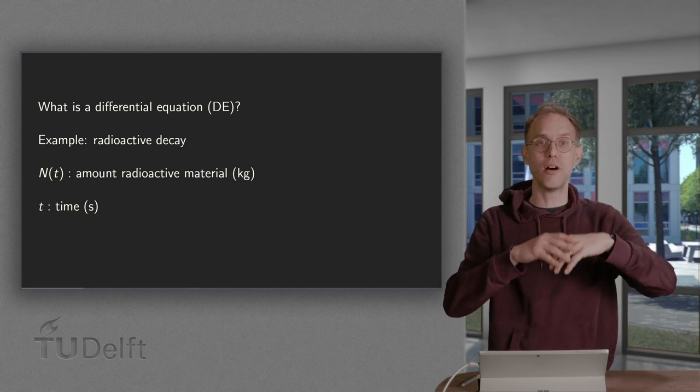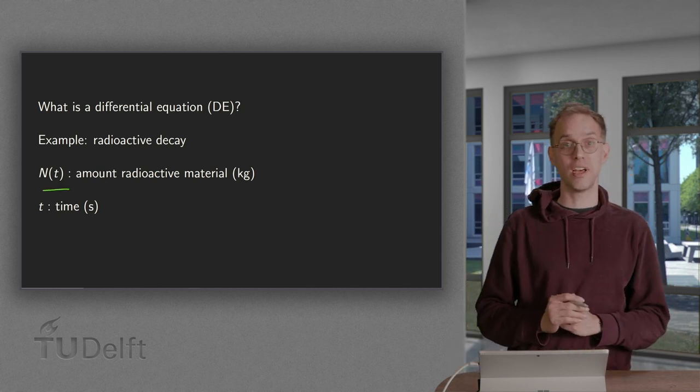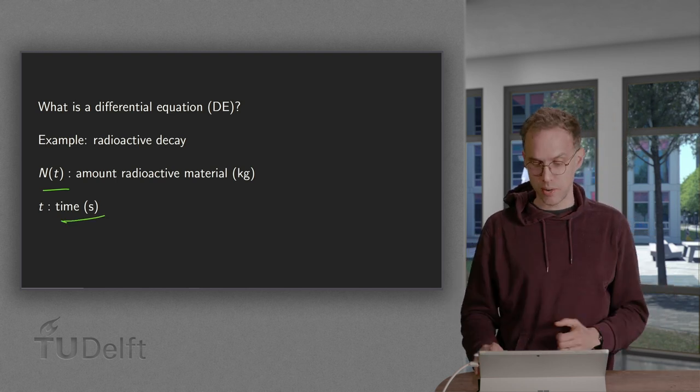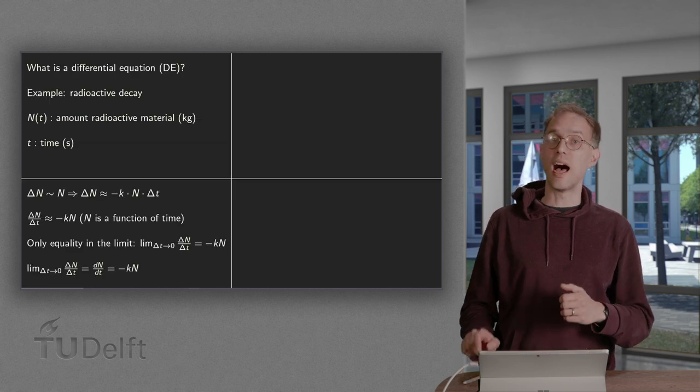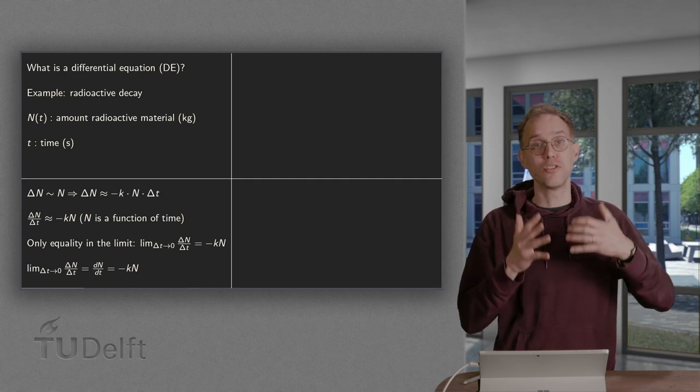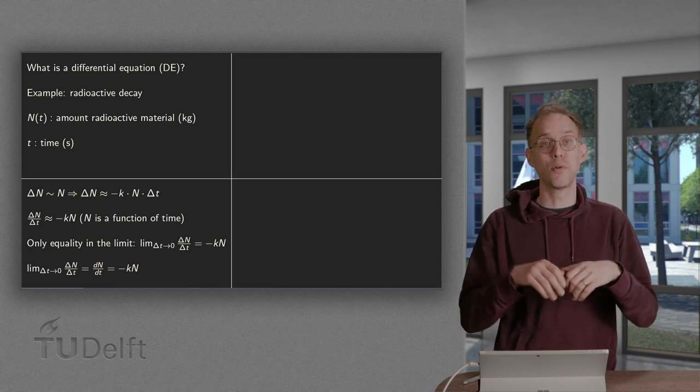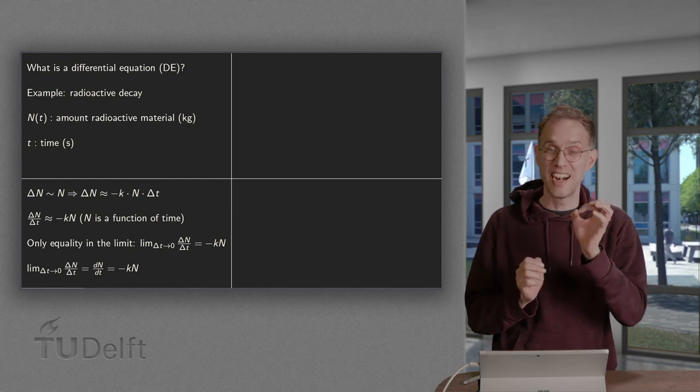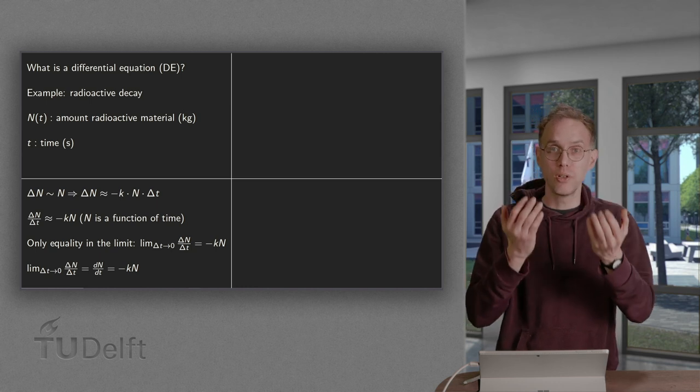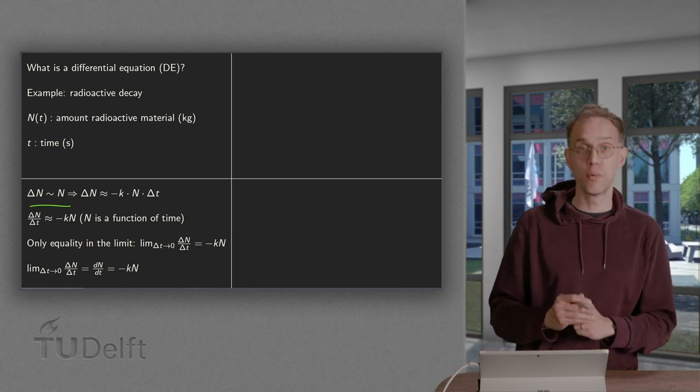Suppose you have some amount of radioactive material in kilograms and denoted by capital N as a function of time, where time is measured in seconds. Now we are going to have decay of this material. And how much of the material will decay? Well, every atom has a certain chance to decay. So that means that the amount which is decaying is proportional to the number of atoms you have right at that moment. So delta N is proportional to N.